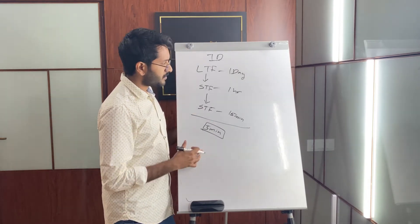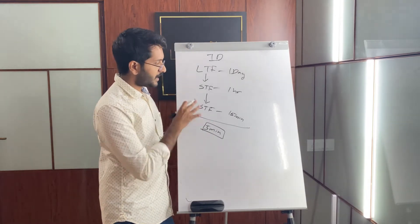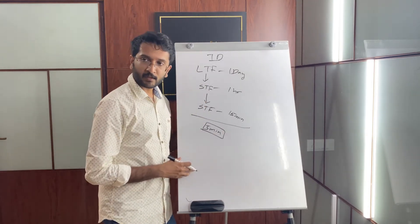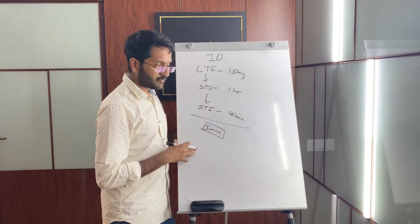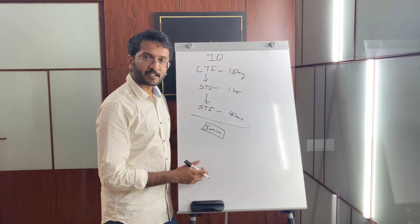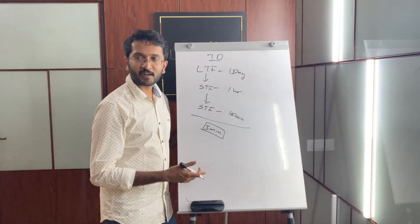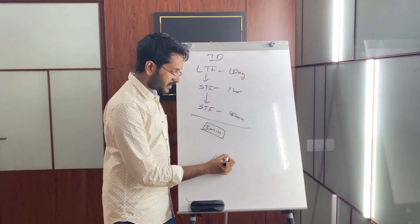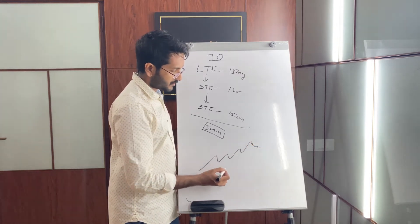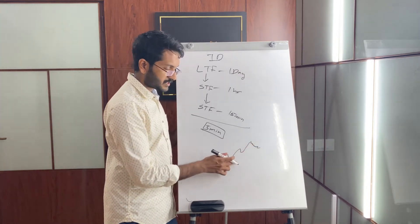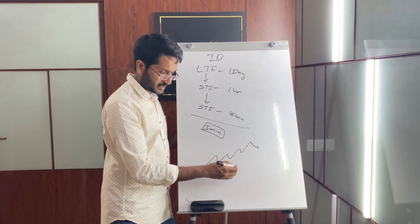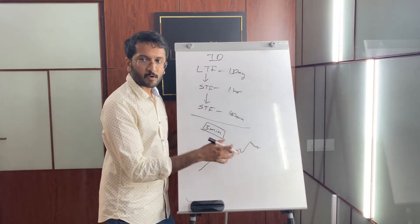The reason for following this entire methodology is the fact that within a trend itself there could be multiple trends. Within an uptrend itself there could be a small downtrend. If you zoom in, within an uptrend there could be some sideways trend, there could be some downtrend, etc.